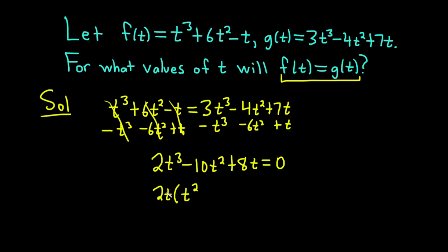What do we multiply by 2t to get negative 10t squared? That's going to be minus 5t. And you can check 2t times 5t is 10t squared, and we have a negative. And then what do we multiply by 2t in order to get 8t? Simply 4. And this is equal to zero.